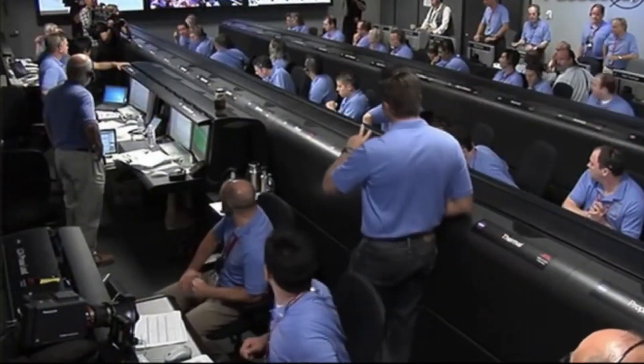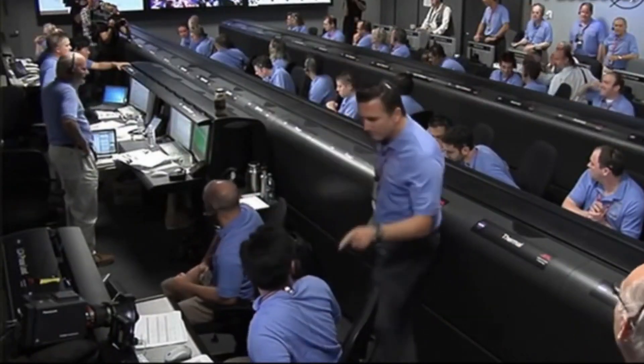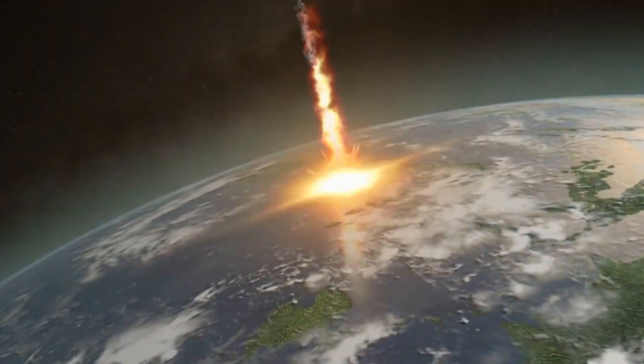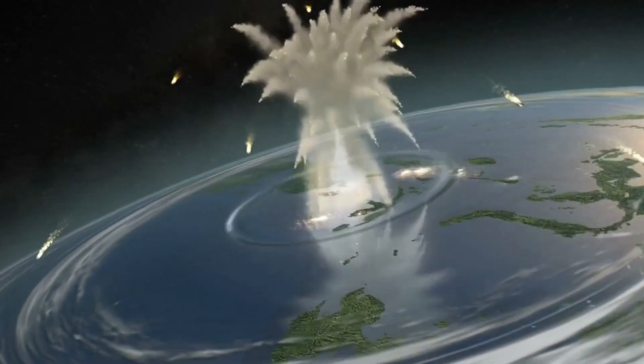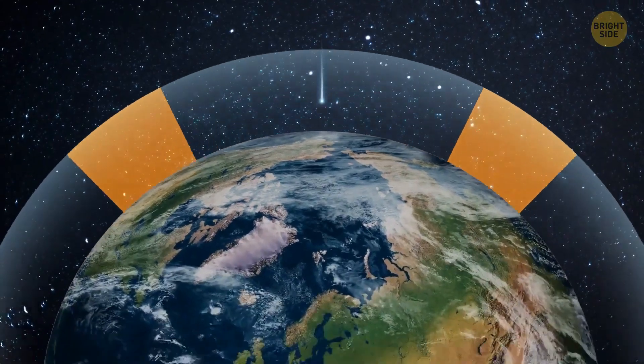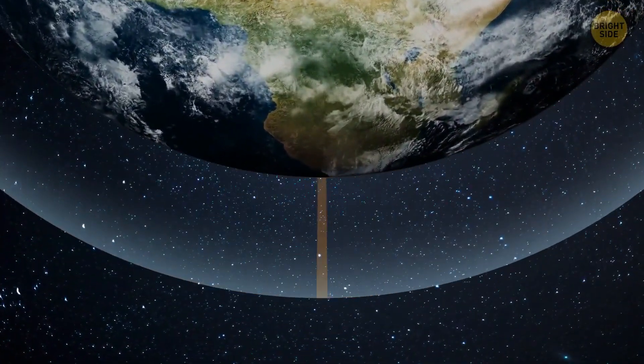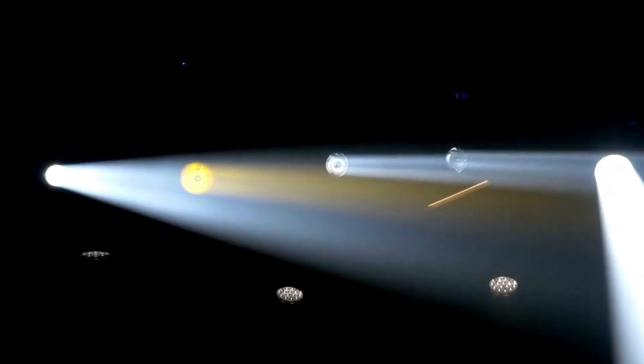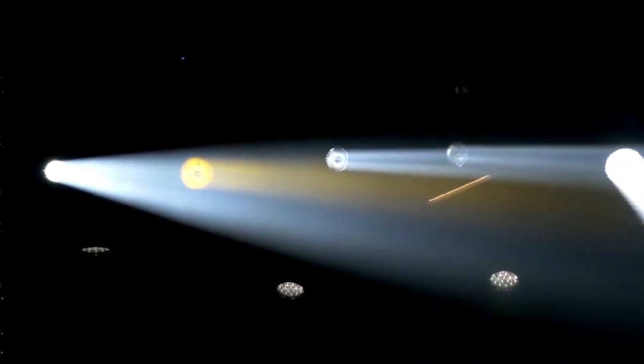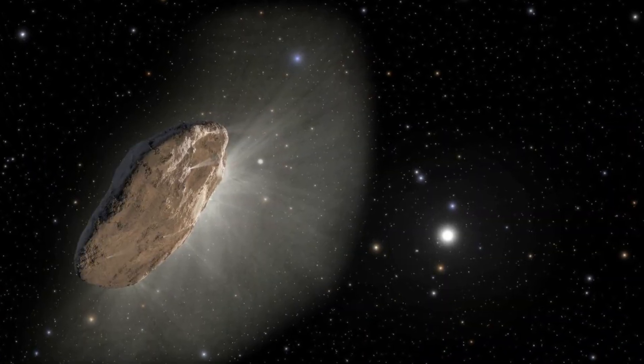These objects could potentially collide with Earth, although their small size and the unpredictability of their orbits mean that such impacts are relatively rare. But given that dark comets exhibit comet-like behavior, we may one day see a scenario in which one of these objects does indeed cause significant damage. This is why scientists are paying closer attention to them.